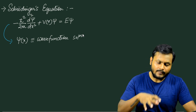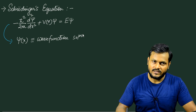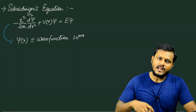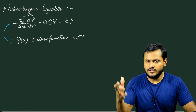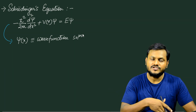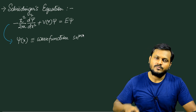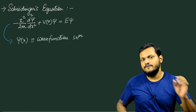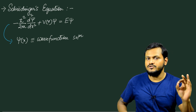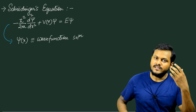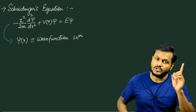Like any other second-order differential equation, the Schrödinger's equation has some interesting properties. One interesting property is that if you multiply the wave function solution with a constant, then the new function is also going to be a solution of the original differential equation.